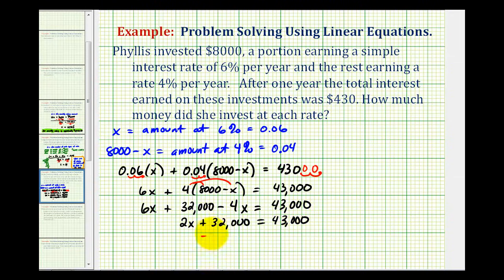So we'll go ahead and subtract 32,000 on both sides. So we'd have 2x equals 11,000. Divide both sides by two.